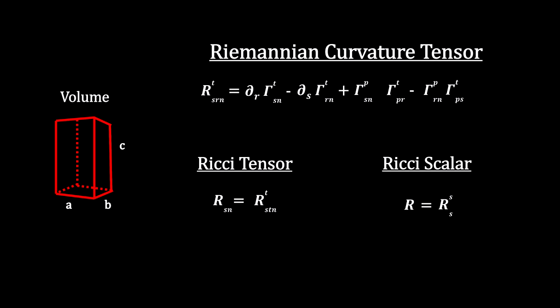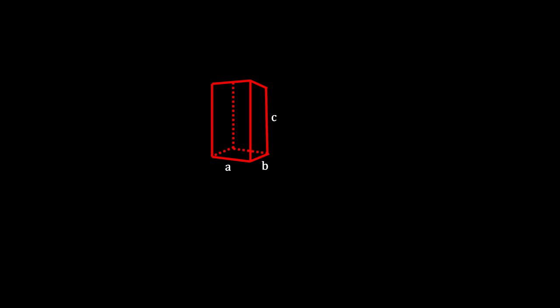A subset of this tensor was developed by a mathematician named Gregorio Ricci-Curbastro. Where Riemann gives us the curvature for every geodesic, Ricci gives us the average for a volume. With this, we can calculate the amount by which a volume deviates from what it would be in Euclidean space.